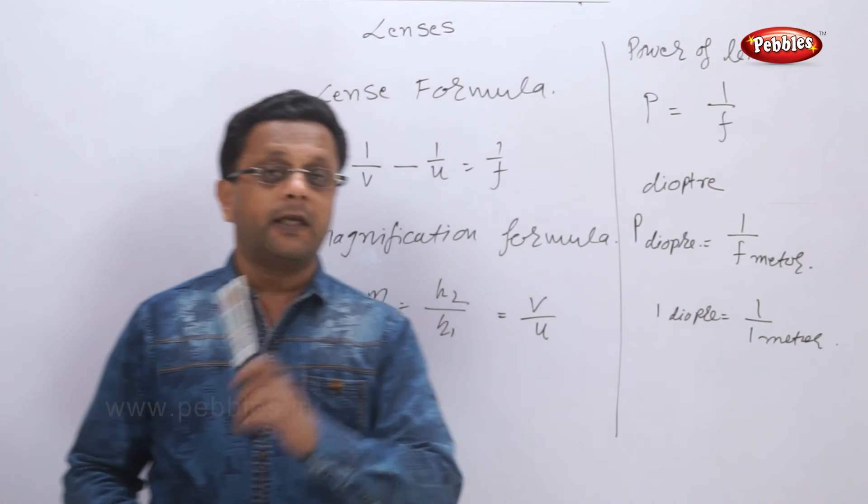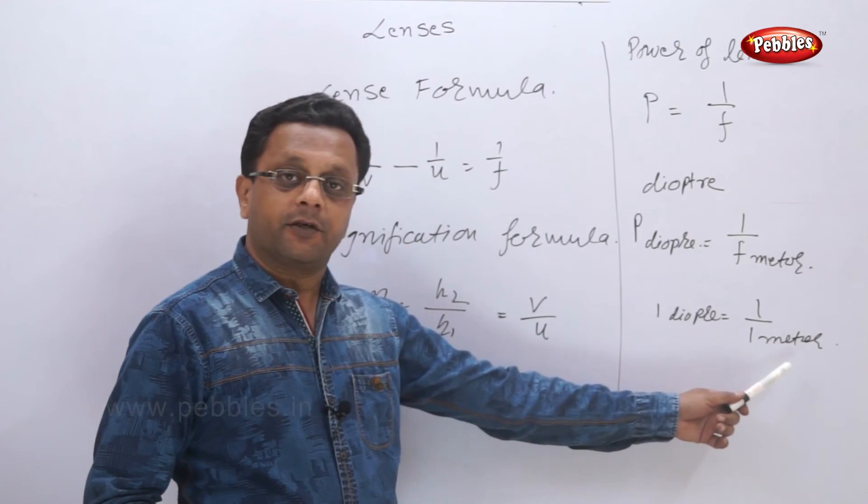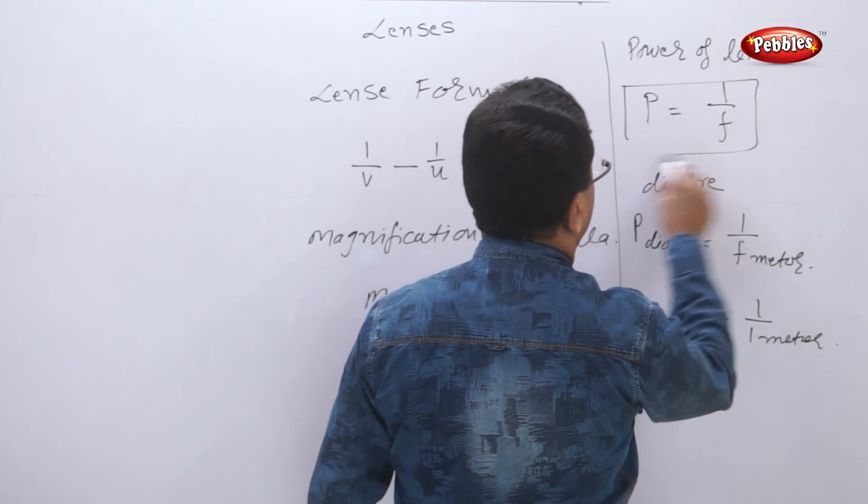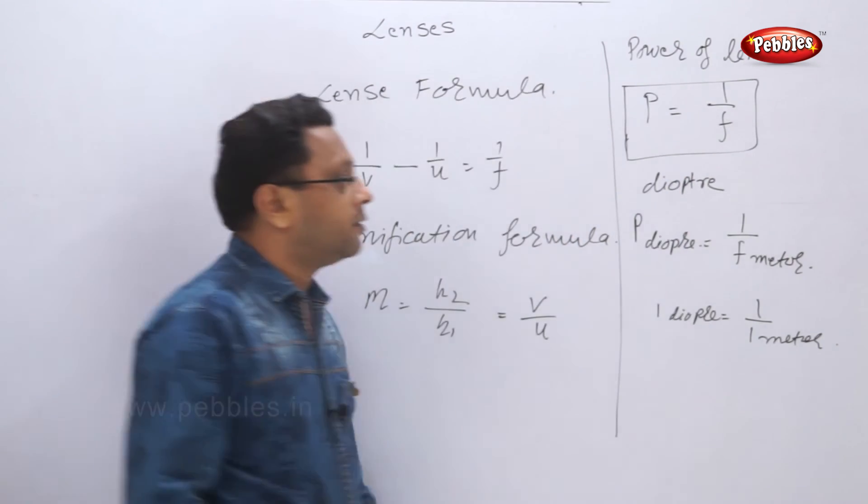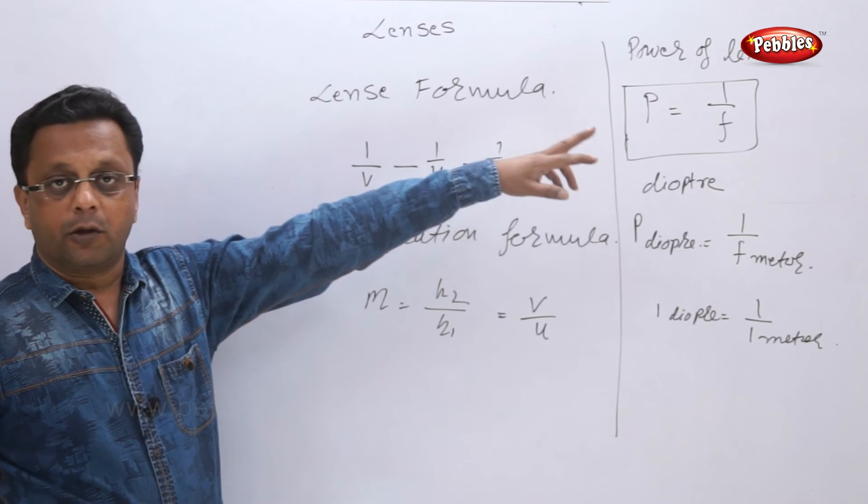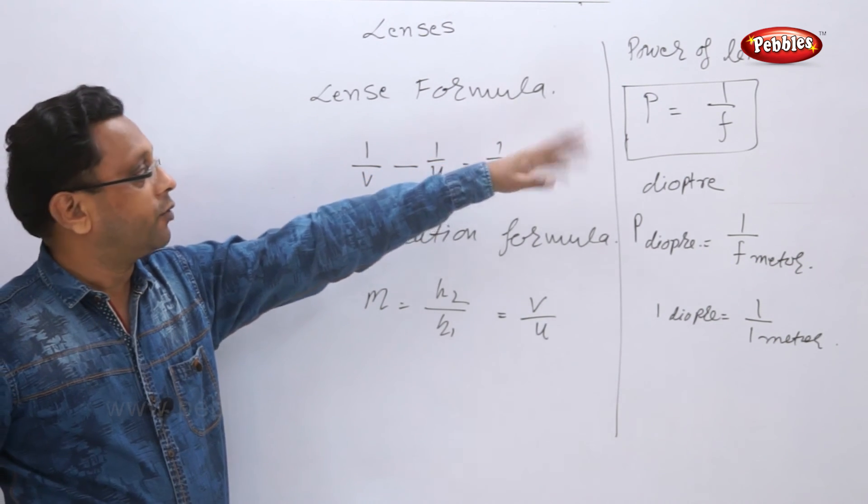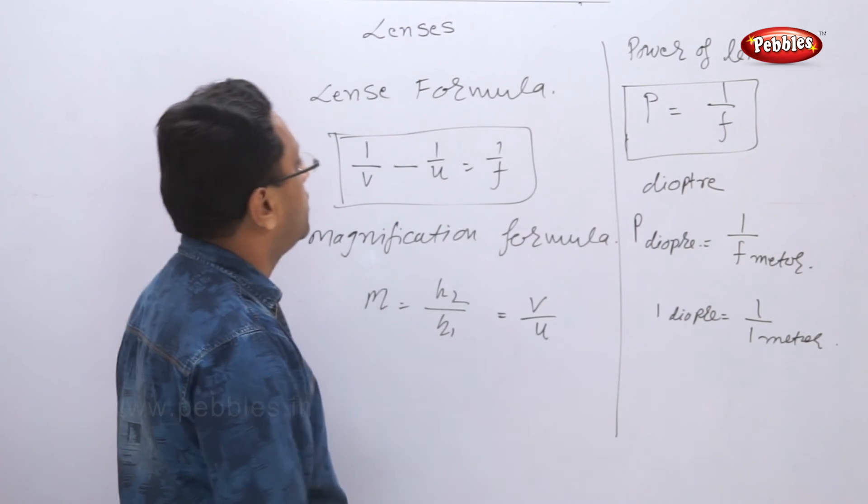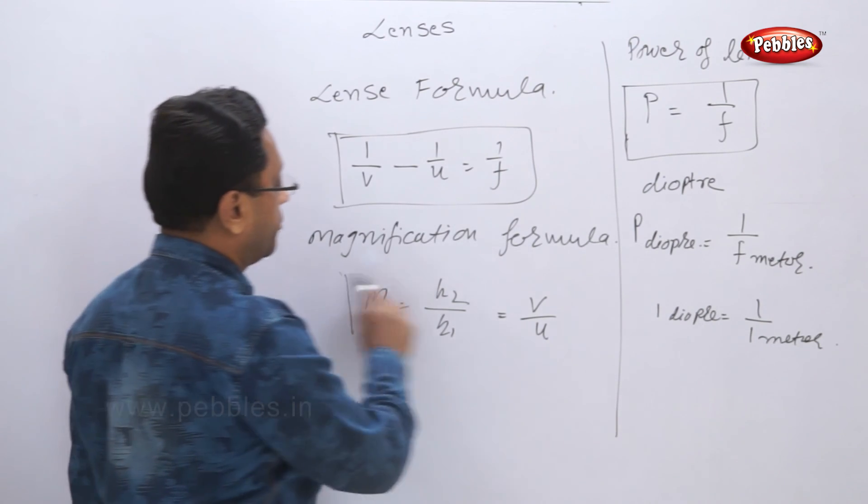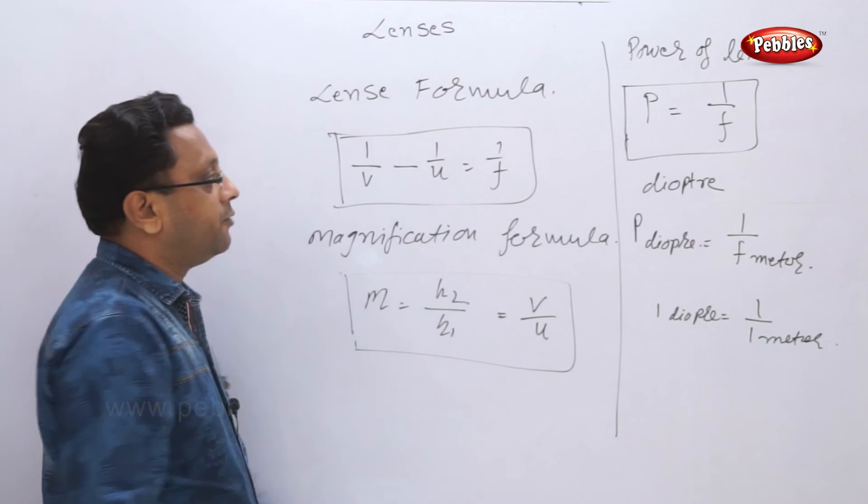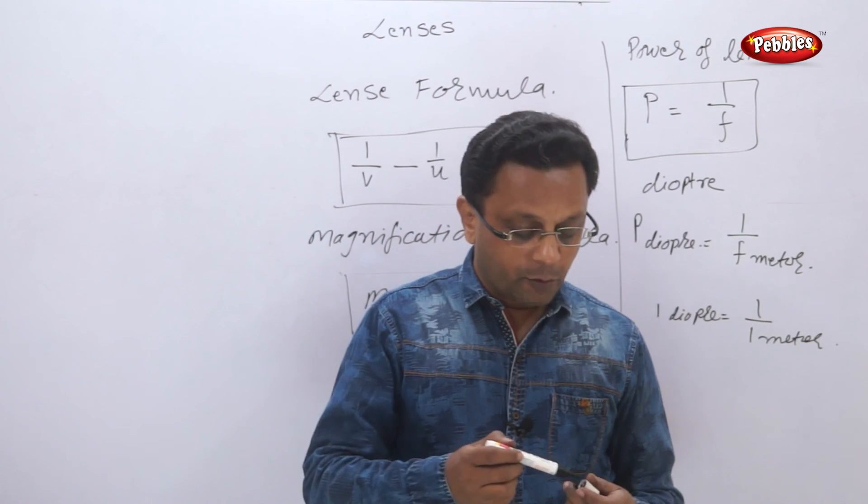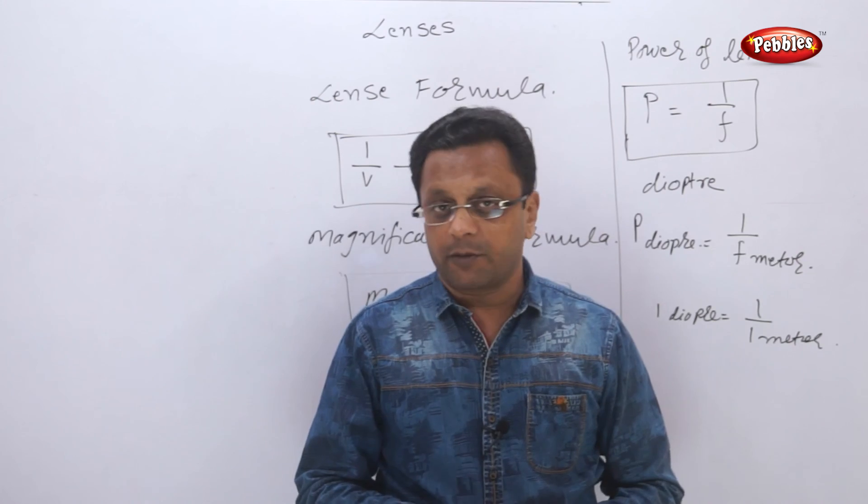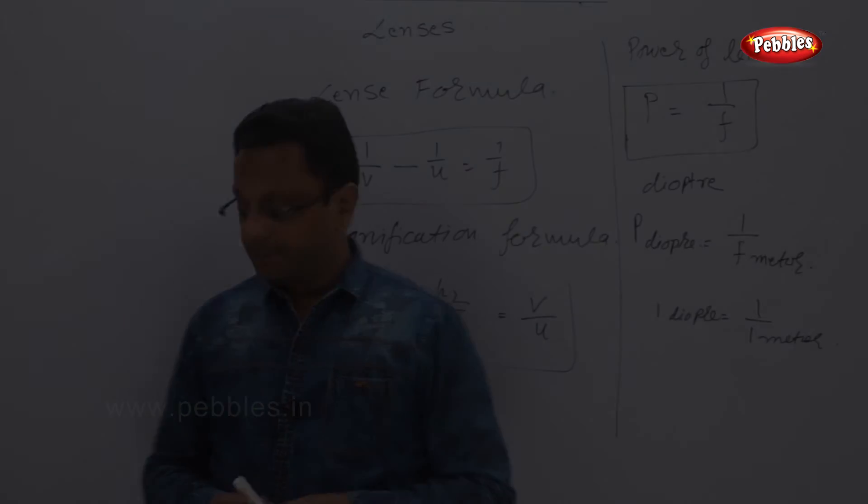We now have three formulas with us. First is the power of lens formula, P equals 1/f. Second is the lens formula. Then we have the magnification formula, and then we have the power of lens formula. Based on these three formulas we can solve a number of problems. So let us see a few problems.